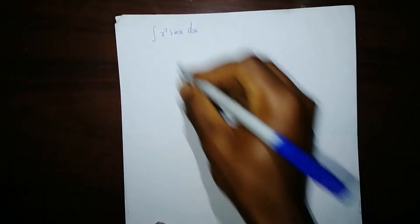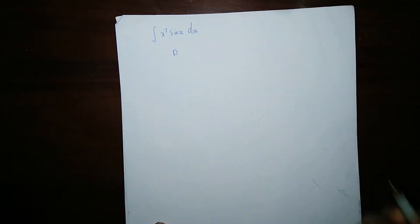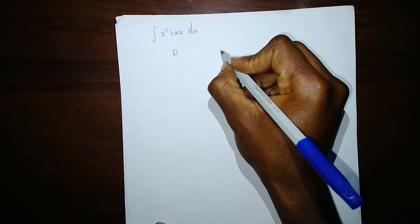We have a method that I prefer to call the tabular method. It's very simple, very easy, and very fast. What you only need is to create a table. One column you name differentiating, and the other one integrating.